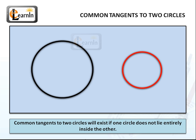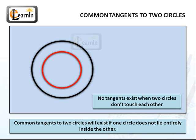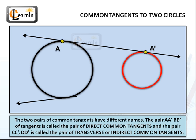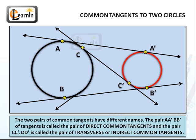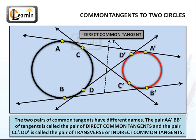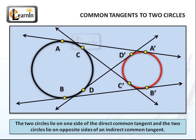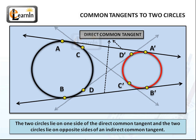Here, one circle is below the line and another circle is above the line. All of these common tangents will only exist if one circle does not lie entirely inside the other circle — if it does with no point of contact, there's no common tangent. Now looking at this figure with many common tangents drawn in: we have four common tangents — AA', BB', CC', and DD'. The pair AA' and BB' is called the pair of direct common tangents. The pair CC' and DD' is called the pair of transverse or indirect common tangents. The two circles lie on one side of a direct common tangent and on opposite sides of an indirect common tangent.